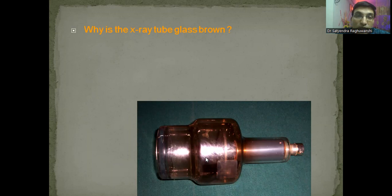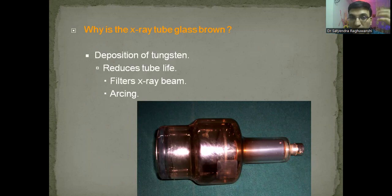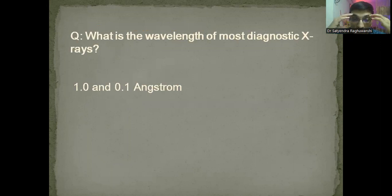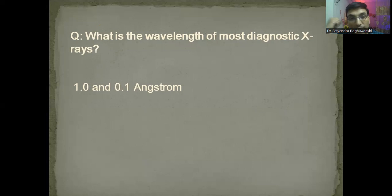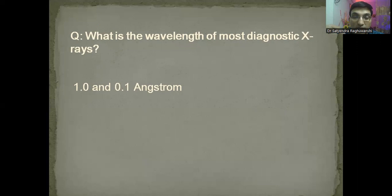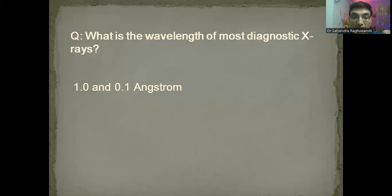Why does the x-ray tube glass become brown? Because of deposition of tungsten vapors — this is known as arcing. What is the wavelength of x-rays? Many candidates forget this during examination. For diagnostic x-rays the wavelength is 0.1 to 1 angstrom. One angstrom equals 10 to the power minus 10 meters. Different books give different values — don't bother about that, just remember the simplified value of 0.1 to 1 angstrom.